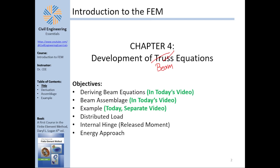Hello everyone and welcome back to the continuation of the lectures in the finite element method, brought to you by the Civil Engineering Essentials channel. In this video we're going to continue our look at a book called 'A First Course in the Finite Element Method' by Daryl L. Logan, and we're going to deal with Chapter 4, which develops the beam equations. Today we'll derive the beam equations, look at beam assemblage, and check out a quick example — so sit back, relax, and enjoy the show.